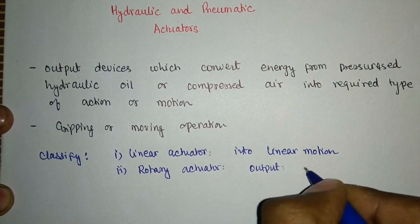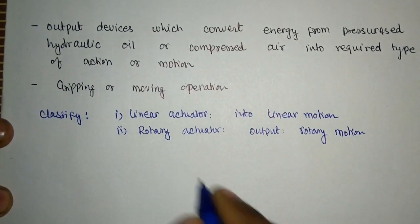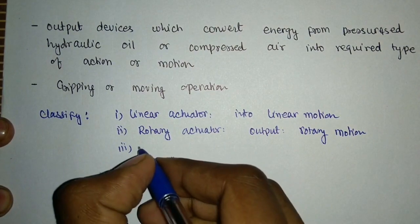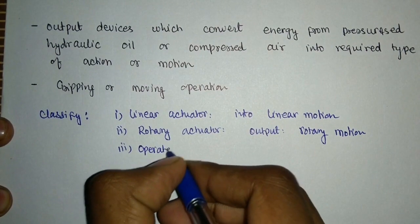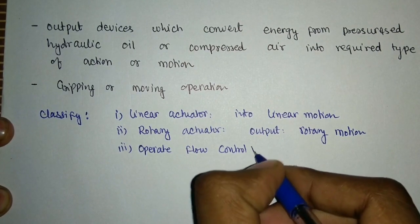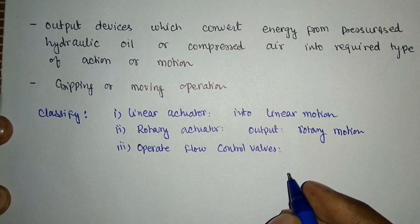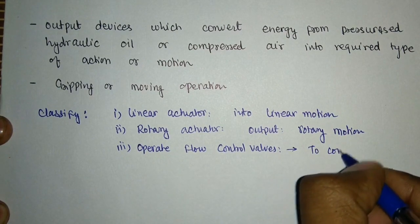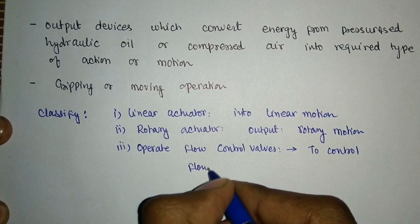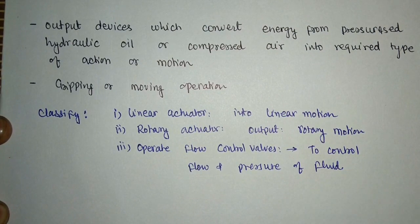There is a third classification which is not related to motion - actuators used to operate flow control valves. In case of flow control valve operation, the basic use is to control the flow and pressure of the fluid. We can control its pressure as well as its direction of flow. That is the main application and the main classification of actuators.